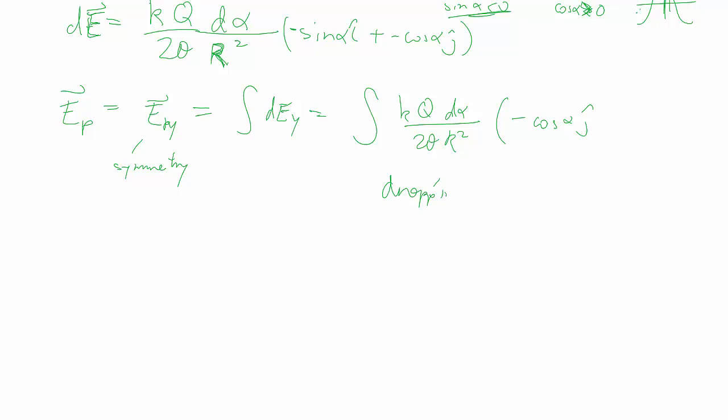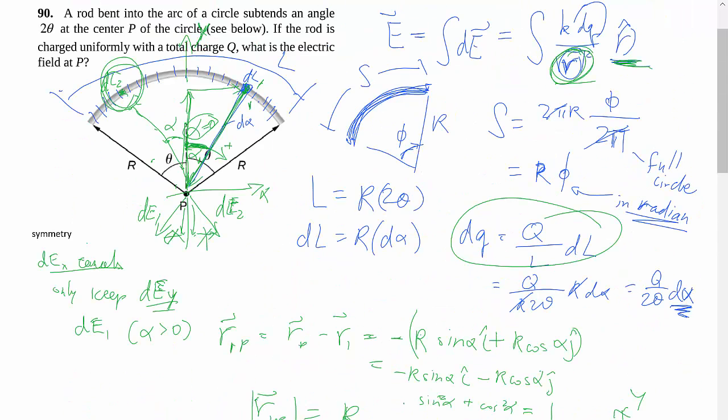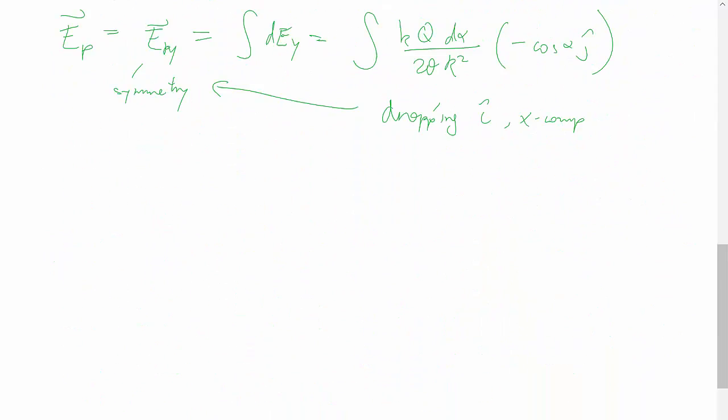Basically what we're doing is we're dropping the i-hat or the x component due to the symmetry. And the last thing is deciding what our start and stop is. Back at the diagram, we want this line all the way to that line, which means alpha is negative theta to positive theta. And there, we've set up the integral, so now we can just use math and integrate.